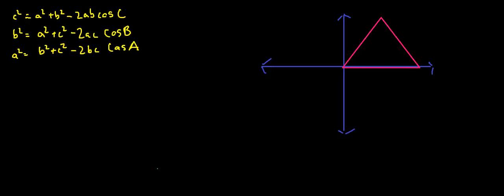To prove the law of cosines, I'm going to take a triangle, any triangle, and place it on the coordinate plane with one of its sides along the x-axis and one of its corners touching 0,0.